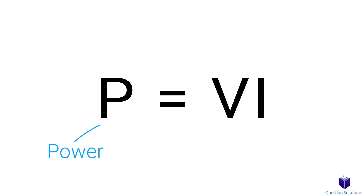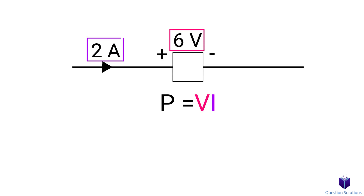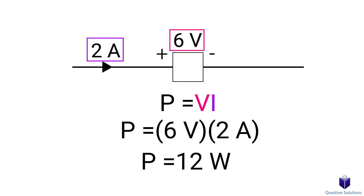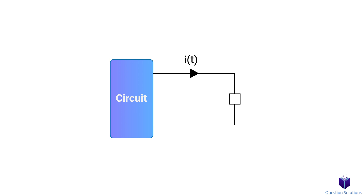An important equation that will come up often is P = VI — power equals voltage multiplied by current. The units for power are joules per second, or watts (W). If we know the voltage and current passing through an element, we can find the power by multiplying the two together. To determine if an element is absorbing or supplying power, we use the passive sign convention: if current is not labeled, we assume it enters the positive terminal. A positive power result means the element is absorbing power; a negative result means it is supplying power.